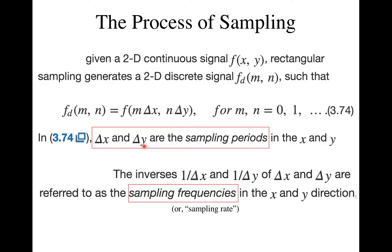These are called the sampling periods, and one over the sampling period gives you the sampling frequency or sampling rate. For temporal signals like music, the sampling period is in milliseconds or microseconds and the sampling rate is in kilohertz or megahertz. For images, the sampling period is in millimeters and the sampling rate is in cycles per millimeter — describing how many cycles of a sine wave you have per millimeter.